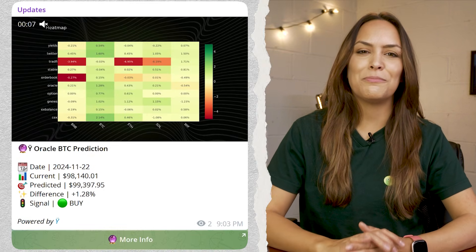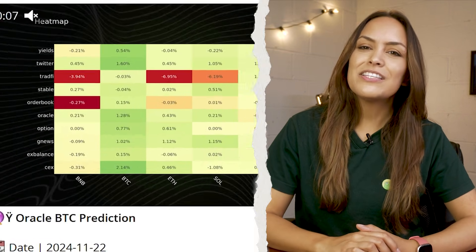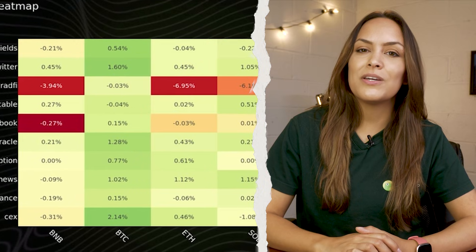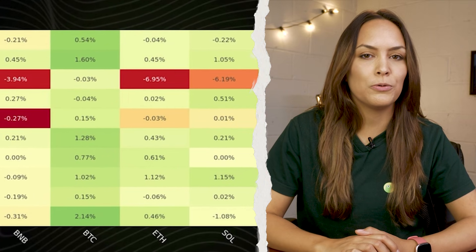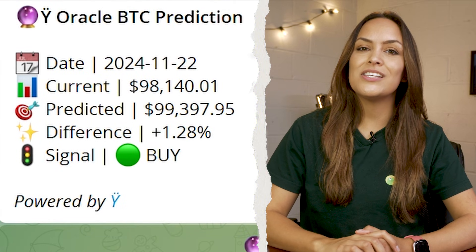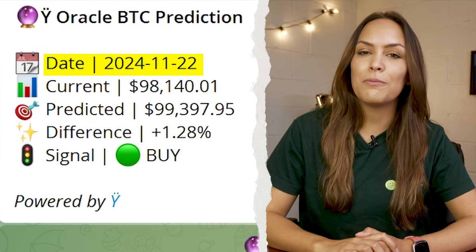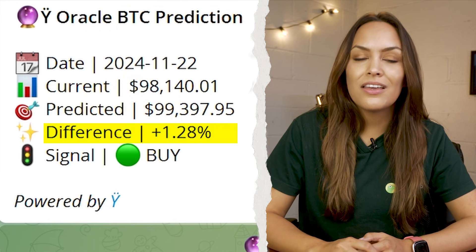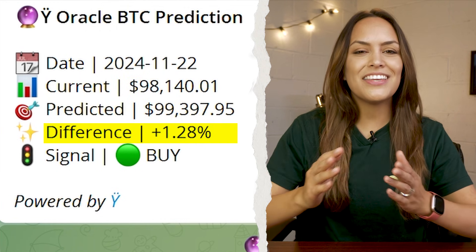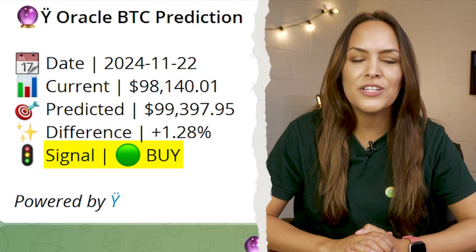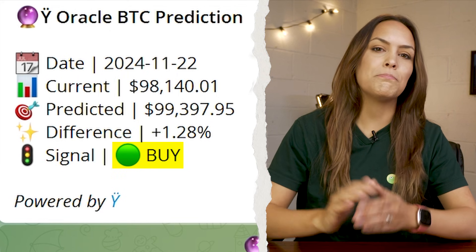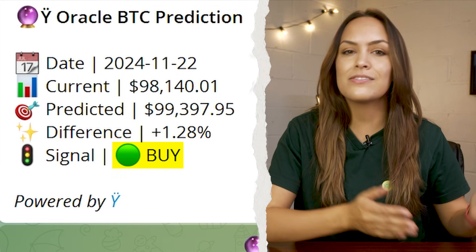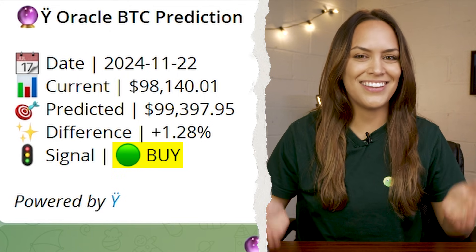Once you're all set up, you'll start receiving updates from the bot in your Telegram chat. At the top, you'll see a heat map that displays the latest predictions from all available models. Just below the heat map, you'll see the date of the update, the current asset value, the model's predicted value, and the difference between them. Lastly, there's a signal indicator which suggests a buy, sell, or neutral stance based on the latest analysis.